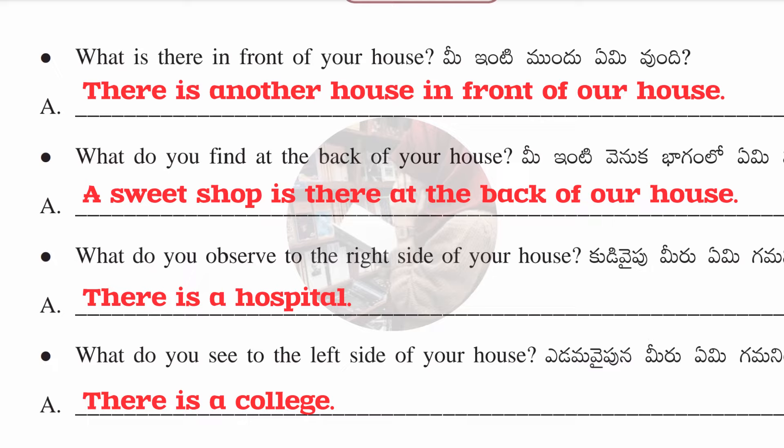Fourth question: what do you see to the left side of your house? Answer: there is a college. No need to write the same as mine — just write according to your own neighborhood. It's better to write whatever houses or places are actually surrounding your house.